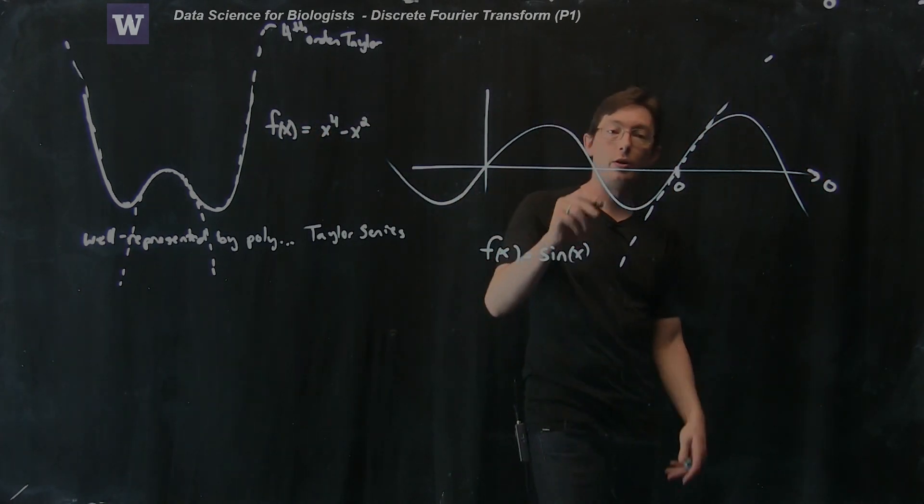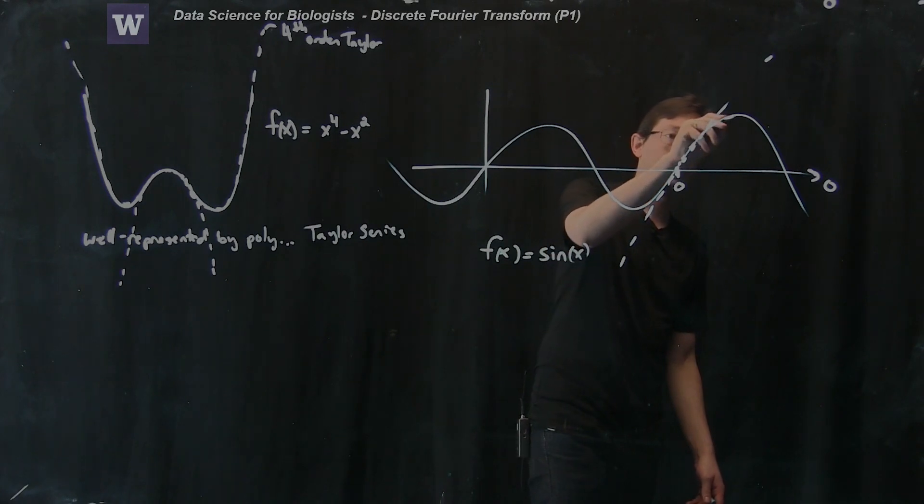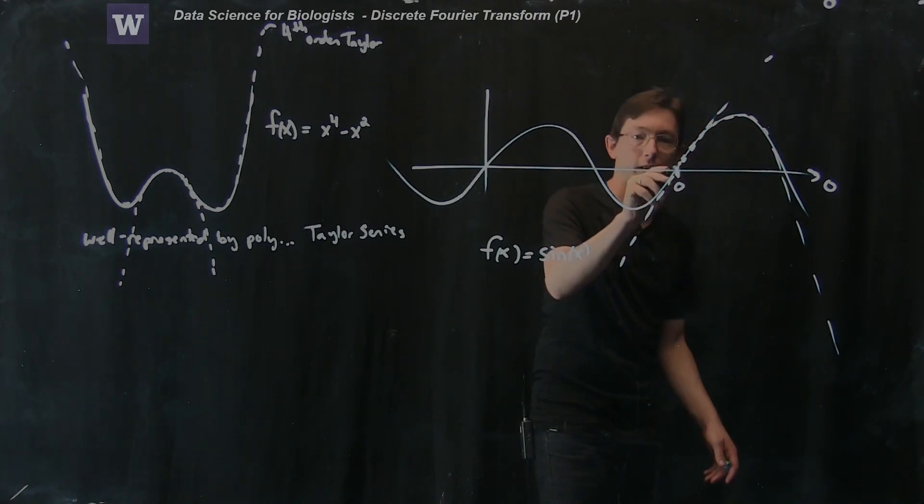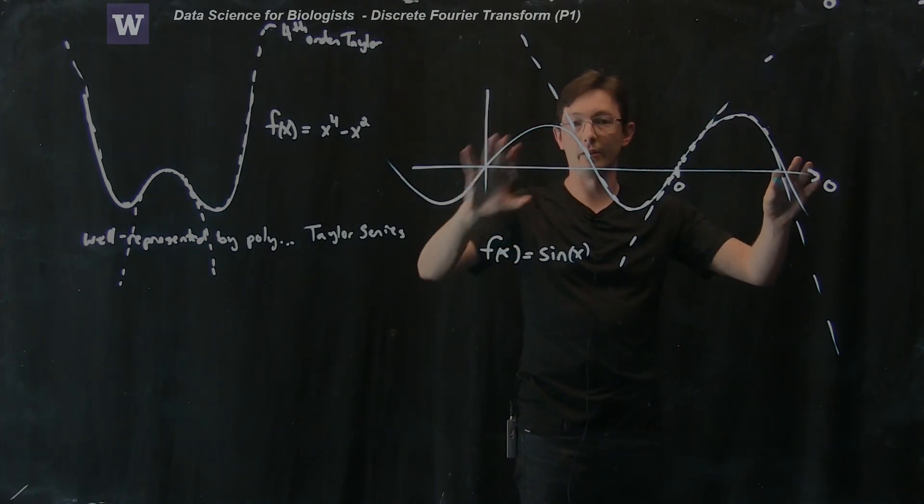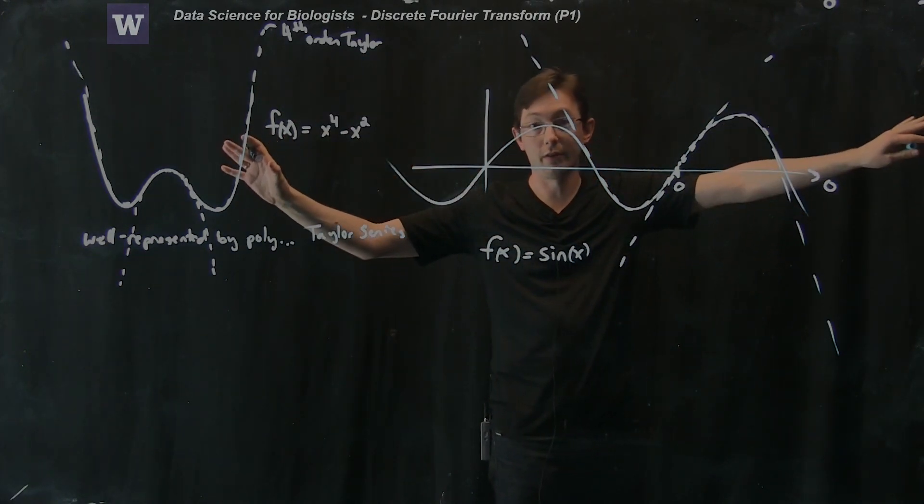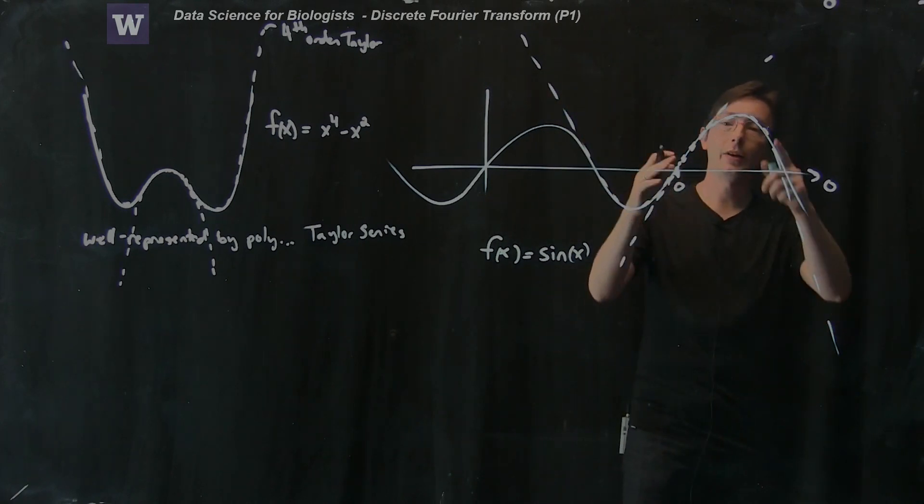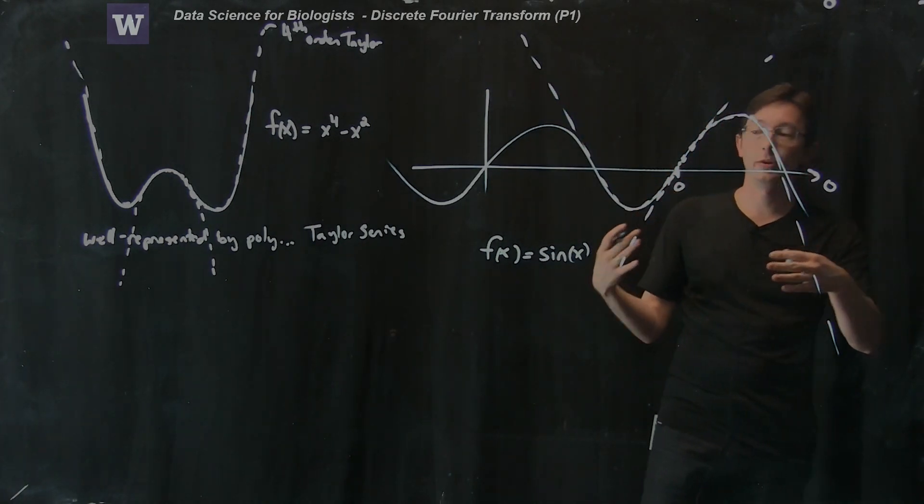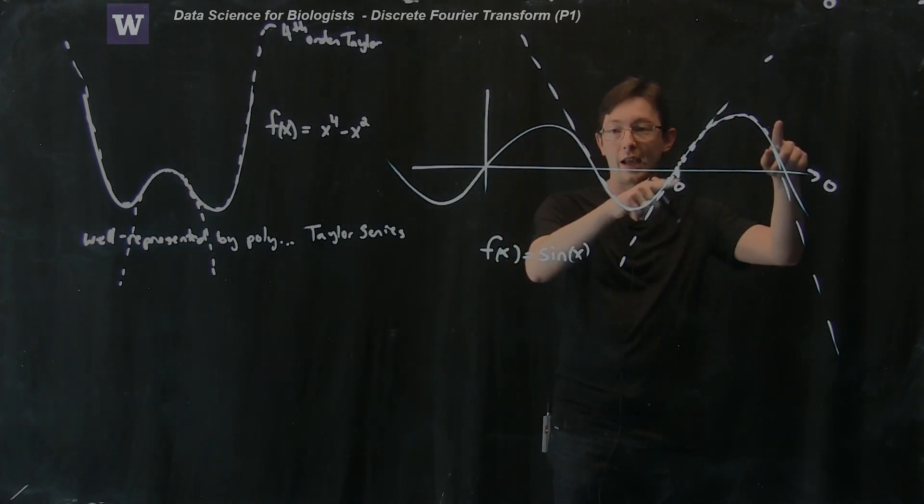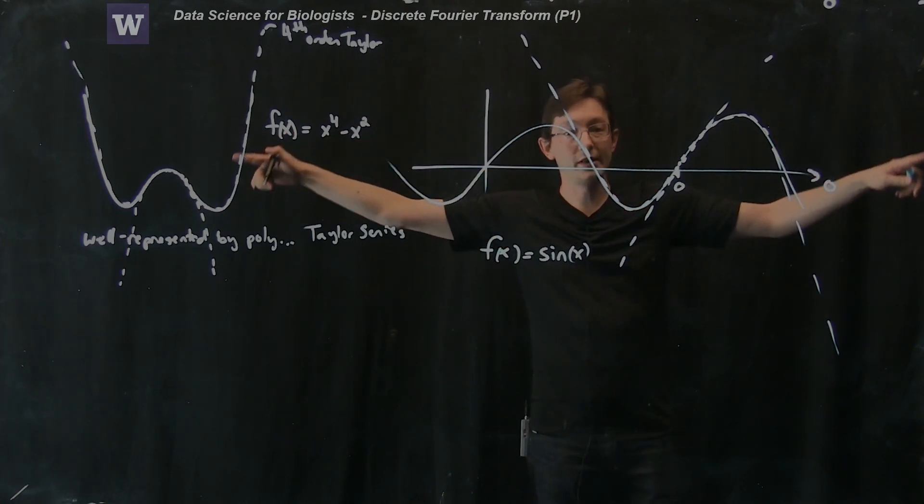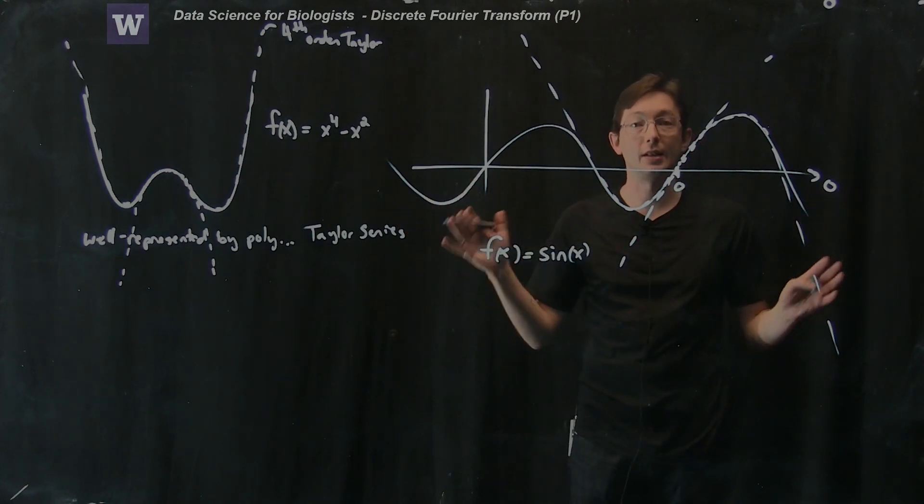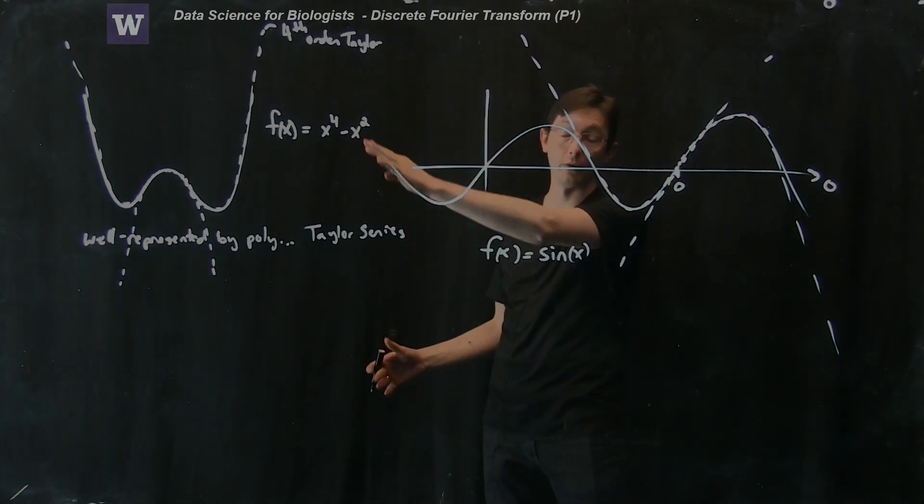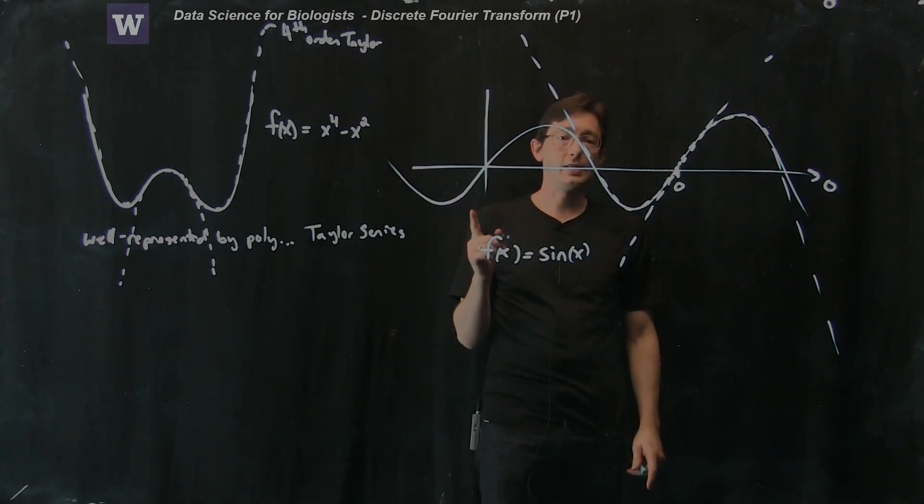If I had a cubic polynomial, it might give me something like this, which is getting better, but it's still not good for all of the other points x. And I would have to keep increasing this polynomial order higher and higher and higher to capture all of the switchbacks in this sine function. So this sine function is kind of hard to approximate with a Taylor series far away from the base point.